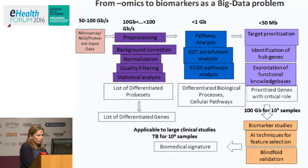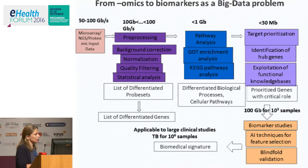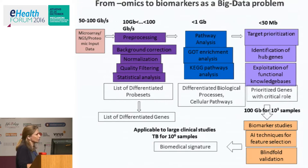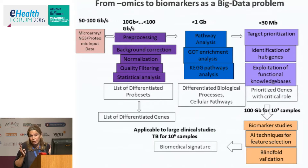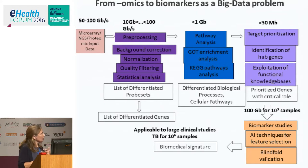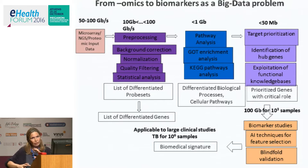What does all this have to do with big data? When we start from NGS and microarray data, we are around 50 to 100 gigabytes. Then we start preprocessing — background correction and normalization — and the data gets a little smaller. Then we look at what is expressed, which pathways are involved, whether it's a cancer pathway or hypertension. Further along we prioritize genes and move toward biomarker studies and biomedical signatures. That is how the data moves through all our work.